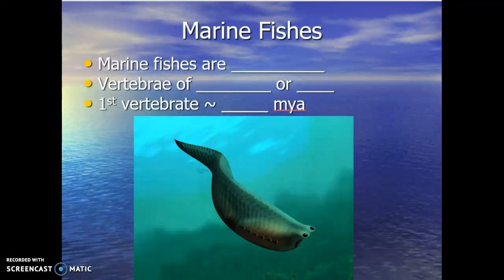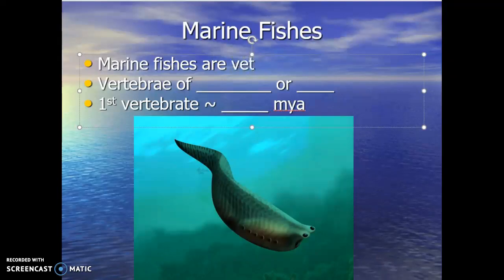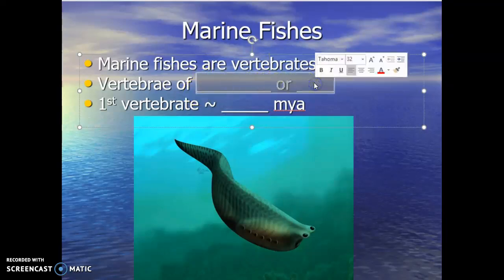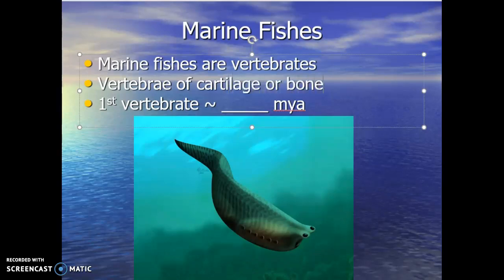Let's take a look at fish. Marine fishes are vertebrates — animals that all have backbones. The vertebrae is going to be made up of either cartilage or bone. When we get into different classes of marine fish, we'll talk about the cartilage or bone. That's a defining feature that helps us separate fish into their different classes.